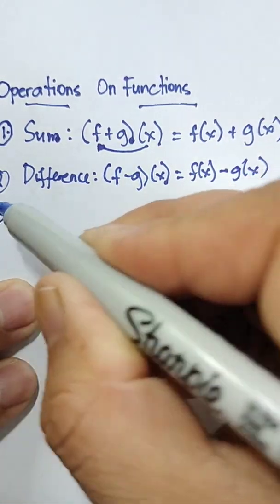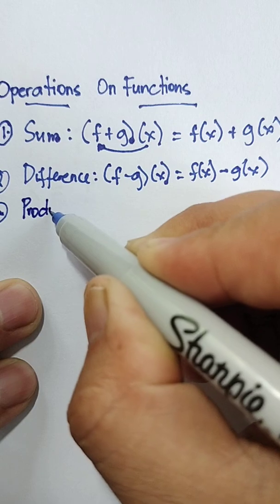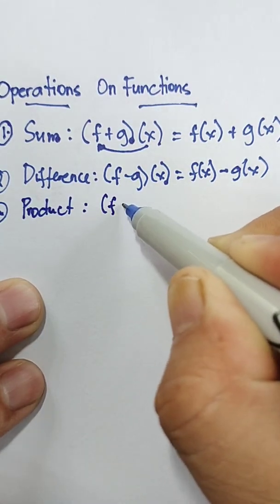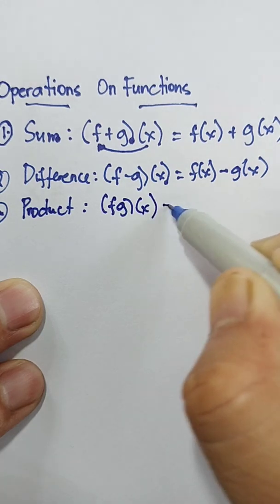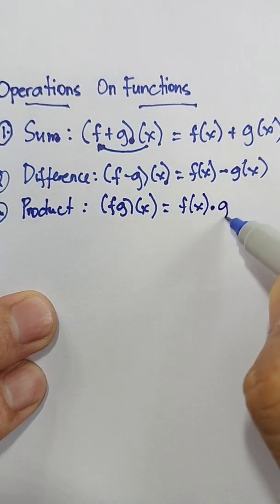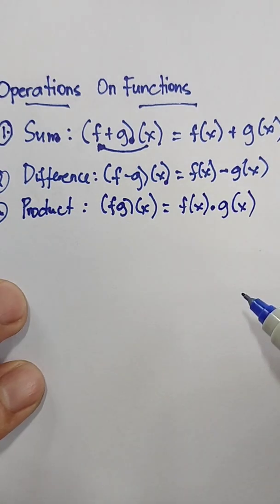Number three, we have product. The formula is the quantity of f times g times x equals f of x times g of x.